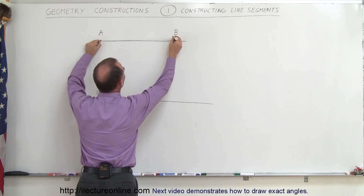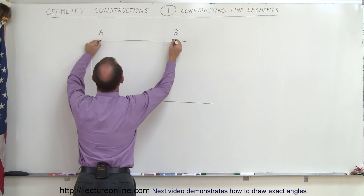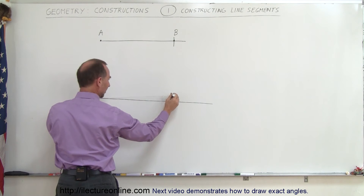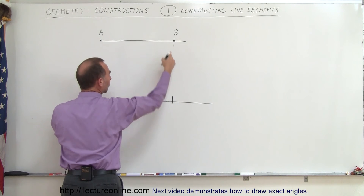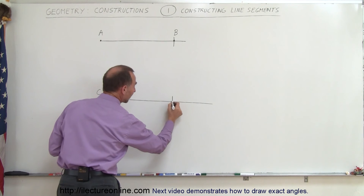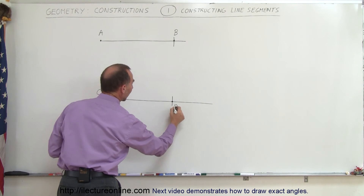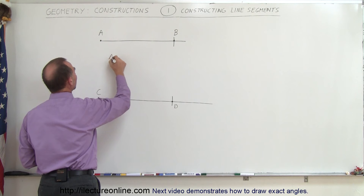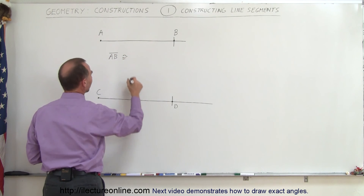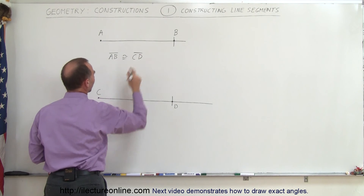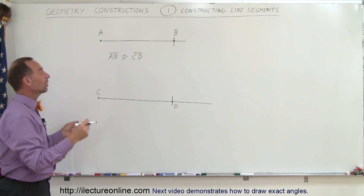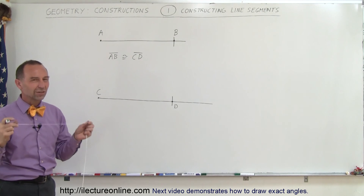If I draw a line going this way, like so, I can come over here, go to point C, and draw the exact same little arc like that. Where those two lines cross, that represents the exact same length. I can now draw a point right here called point D, and I can say that line segment AB is congruent to line segment CD by this method.